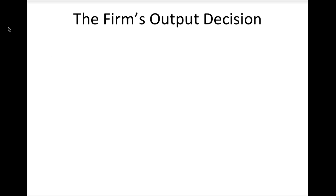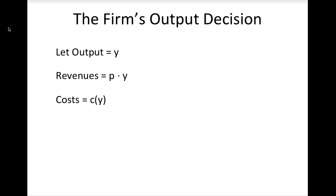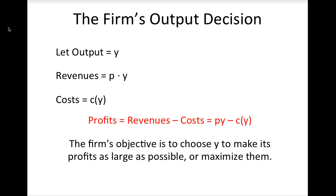Let's now consider the firm's output decision. We will call the amount of output the firm produces Y. Since a firm in a competitive market cannot choose the price it charges for its output, the firm's revenues are the price per unit of output times the number of units of output it produces, or P times Y. Generically, the firm's costs are a function which we will call C of Y. Thus the firm's profits are its revenues minus its costs, or P times Y minus C of Y. The firm's objective is to choose the amount of Y to produce to maximize its profits.